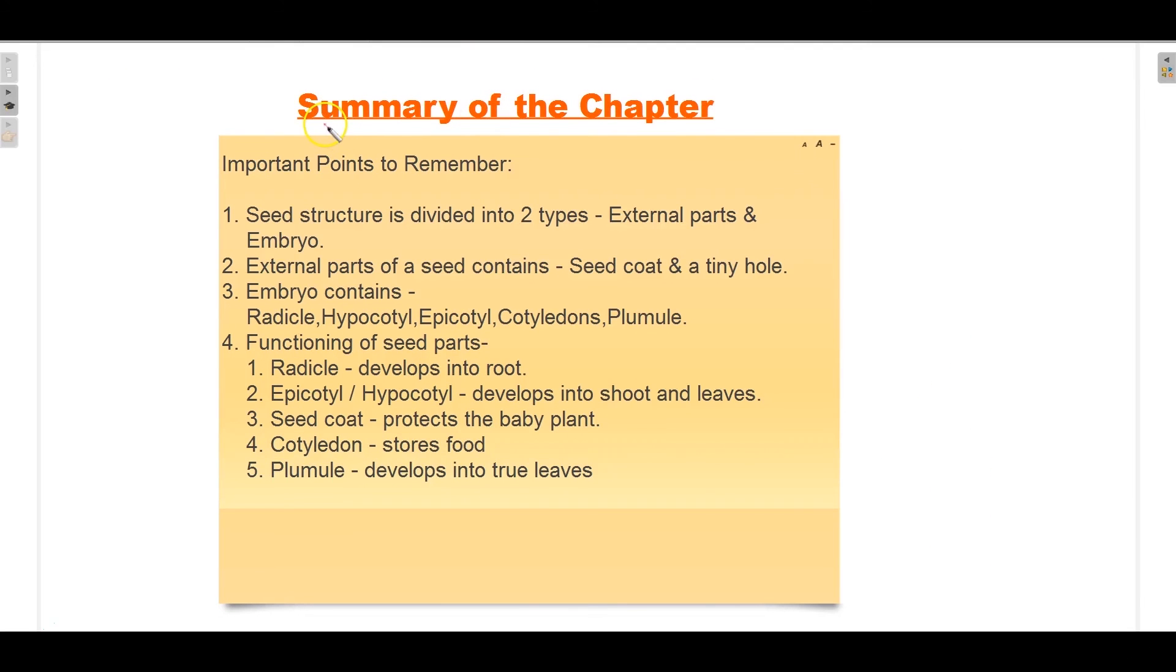Hope you understood the chapter. Let's recap the points. First point: Seed structure is divided into two types - external parts and embryo. Second point: External parts of a seed contain seed coat and a tiny hole.